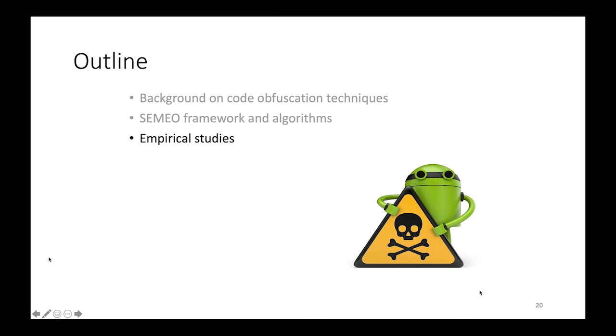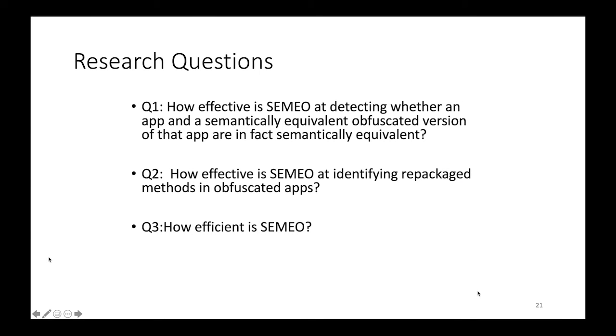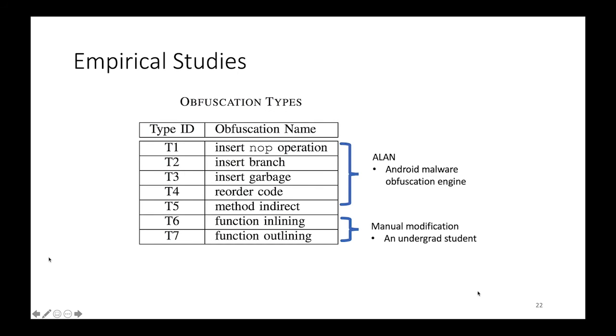Next, we're going to focus on the empirical studies that we have done in this work. In this work, we try to ask three research questions. We want to first evaluate the effectiveness of SEMIO at detecting whether an app and a semantically equivalent obfuscated version of that app are in fact semantically equivalent. The apps are identical, except that one has been obfuscated. The research question two is to see if SEMIO can identify repackage method in an obfuscated app. And identifying repackage method here simply means that what's left behind would consider to be repackage method. Anything that it picks are semantically equivalent. And then the research question three is how efficient is SEMIO.